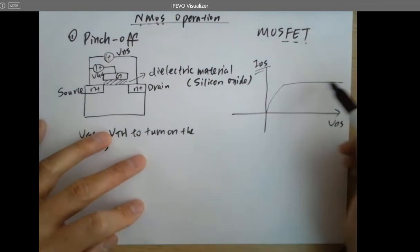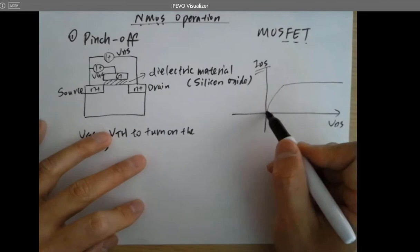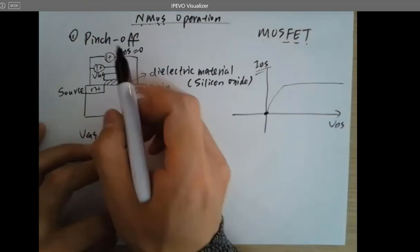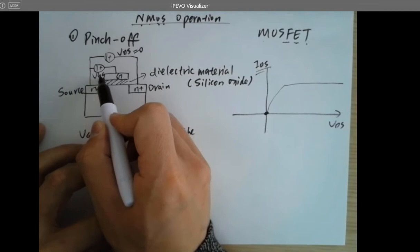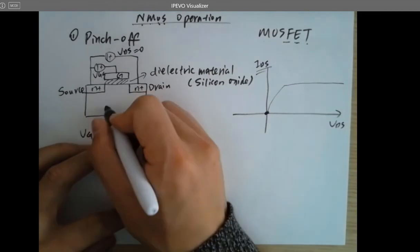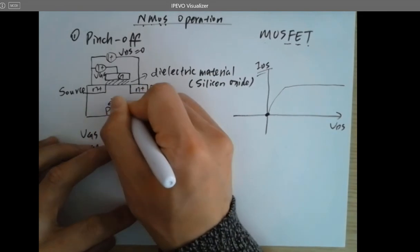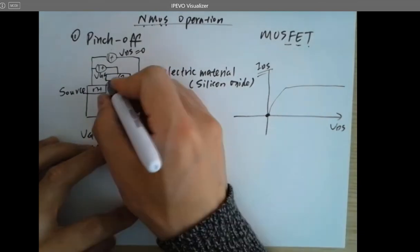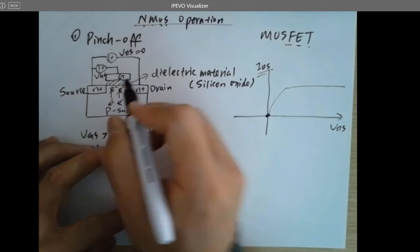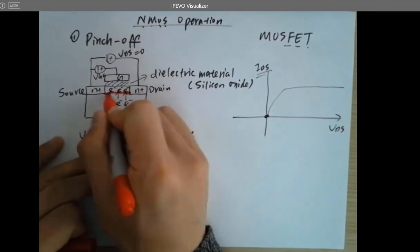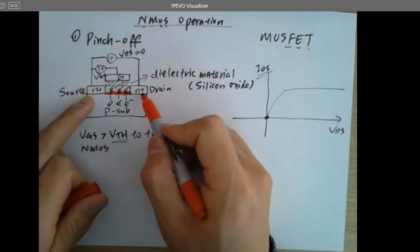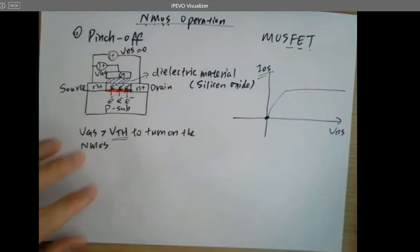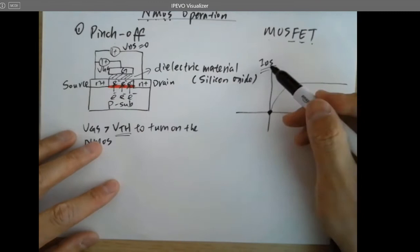The IV curve of the NMOS looks like this. When VDS equals zero, there's no current flow. But whenever I have a positive VGS larger than VTH, the electrons in the P substrate will be attracted to the channel, to form a channel of electrons. However, if there's no voltage drop across the two terminals, there won't be any current flow, because there's no pressure for the electrons to flow.